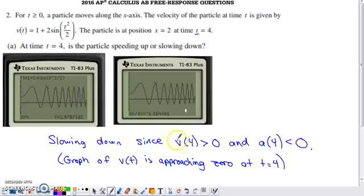An alternate explanation would be: since you have a positive velocity but a negative acceleration, your speed is going to be decreasing.